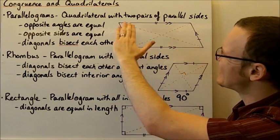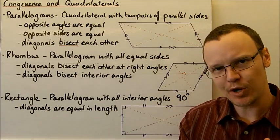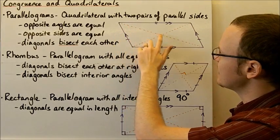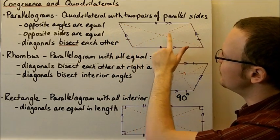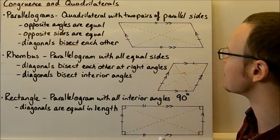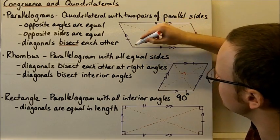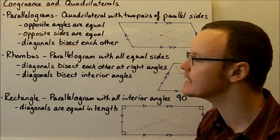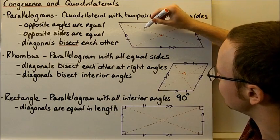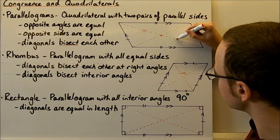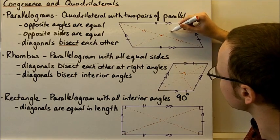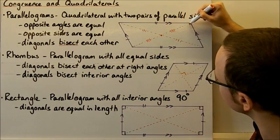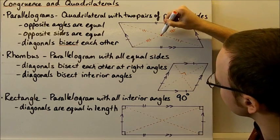And the diagonals bisect each other. The word bisect means to cut evenly in two. So this line here cuts through this line at exactly the middle point — this point is the midpoint of this line and the middle point of this line as well. That means this length here is equal to this length here, and this length here is equal to this length here.